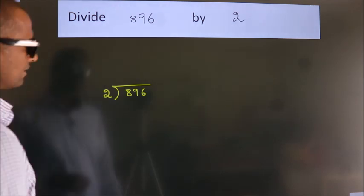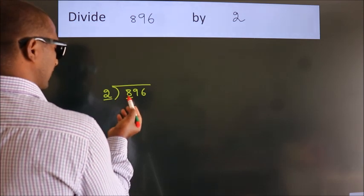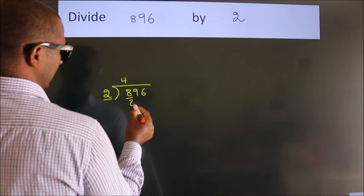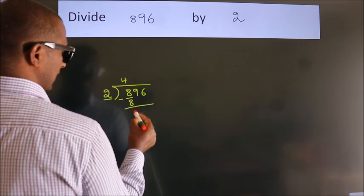Next. Here we have 8, here 2. When do we get 8 in 2 table? 2 fours, 8. Now we should subtract. We get 0.